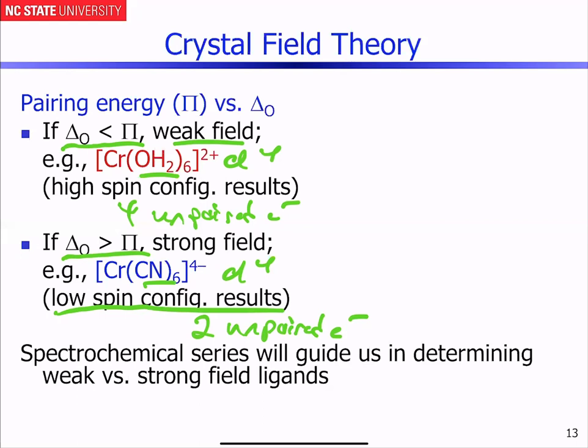But let's continue this discussion. This idea of the ligands dictating the magnitude of del O is known as the spectrochemical series, and that's going to actually be a qualitative guide to let us determine weak versus strong field ligands.